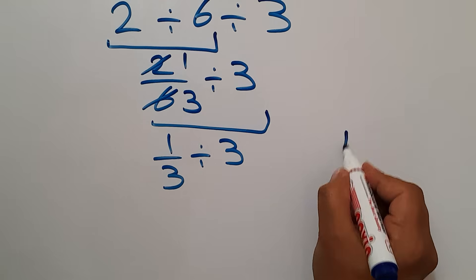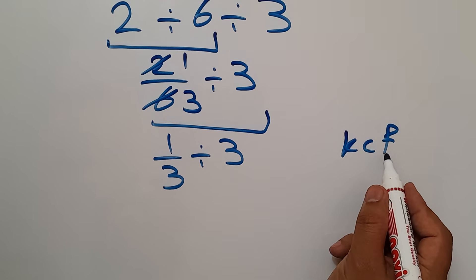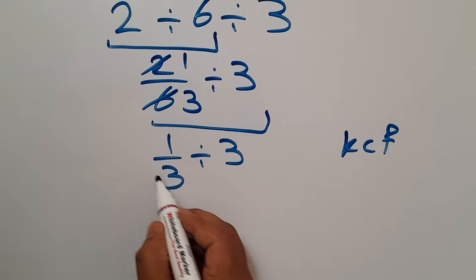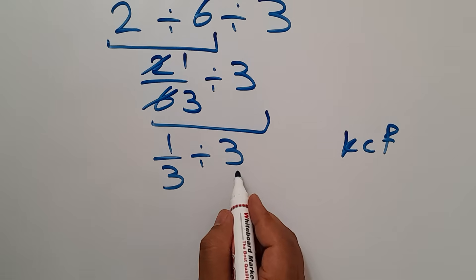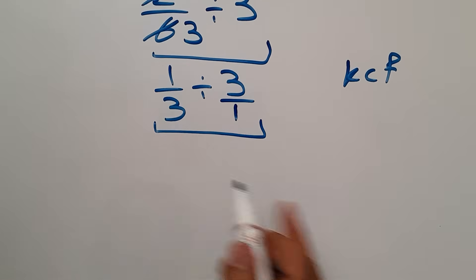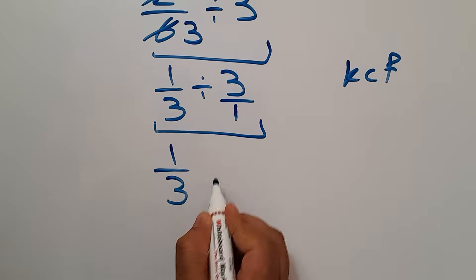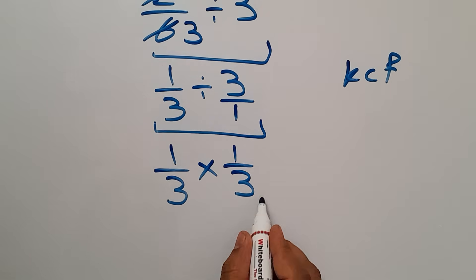According to the KCF rule, K stands for keep, C stands for change, and F stands for flip. Keep the first fraction, change division to multiplication, and flip the second fraction, which is 3 over 1. We can write 1 over 3, then times 1 over 3. And this is equal to